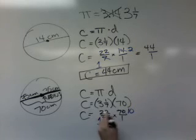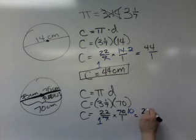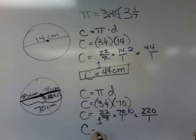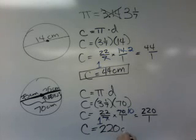And now we've got 22 times 10, which is 220 over, and then 1 times 1 is 1. So we've got the answer for this circumference. Circumference is 220 centimeters.